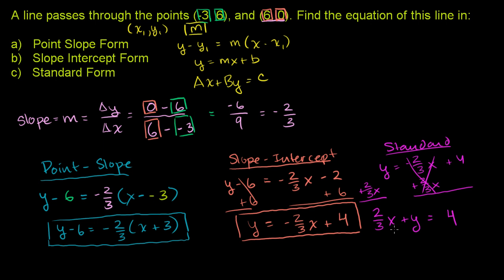If we wanted to make it look extra clean, have no fractions here, we could multiply both sides of this equation by 3. If we do that, what do we get? 2/3x times 3 is just 2x, y times 3 is 3y, and then 4 times 3 is 12. These are the same equations. I just multiplied every term by 3. If you do it to the left-hand side, you have to do it to the right-hand side. And we are in standard form.